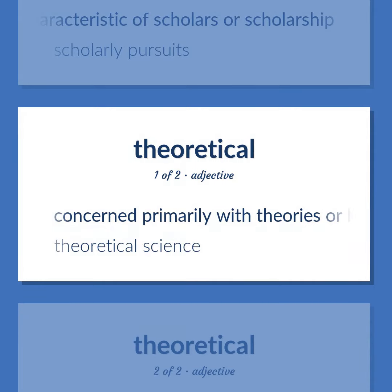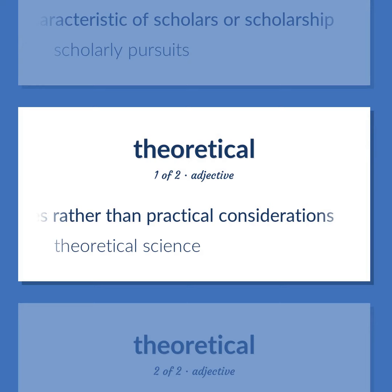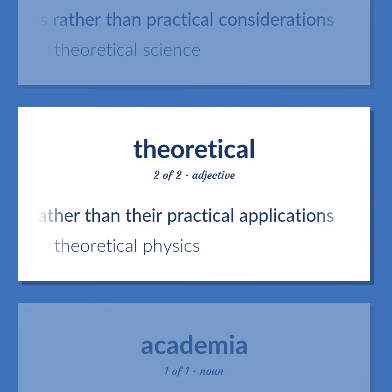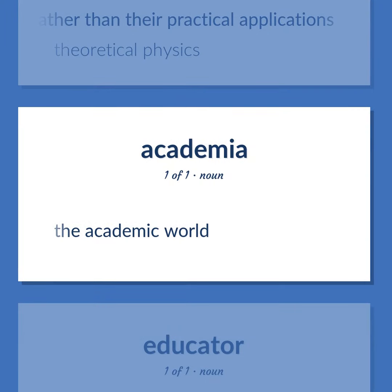Speculative: concerned primarily with theories or hypotheses rather than practical considerations — for example, theoretical science. Theoretical: concerned with theories rather than their practical applications — for example, theoretical physics. Also: the academic world.